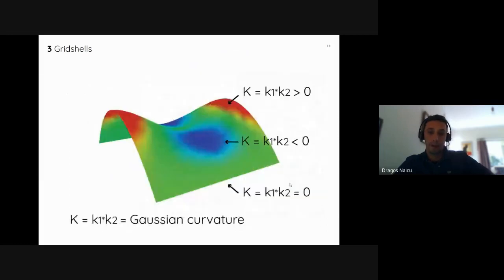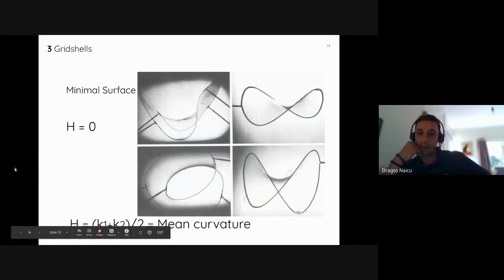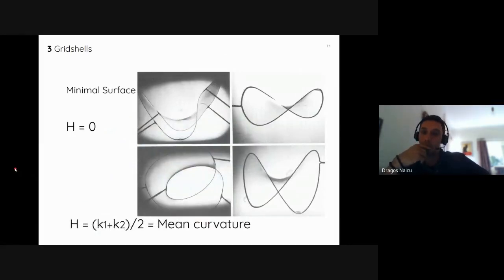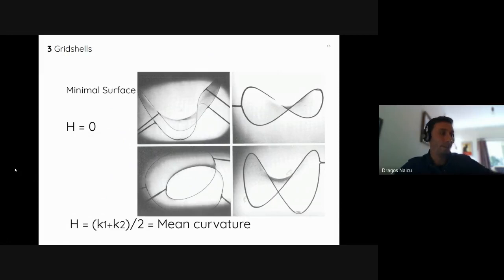Another important measure is mean curvature — the average of the two principal curvatures. When mean curvature is zero, this indicates a minimal surface, which is the surface formed by soap film physical models. This is used in form finding of tensile structures.